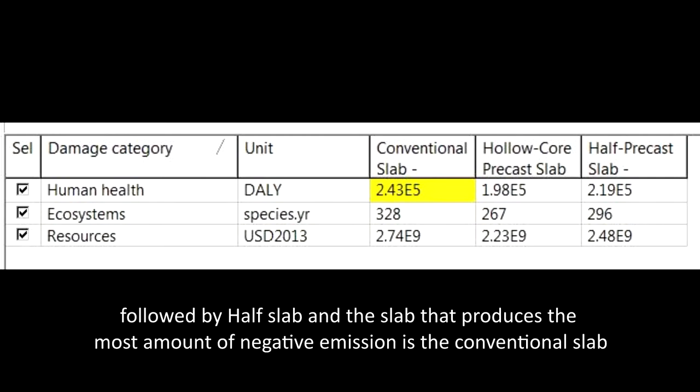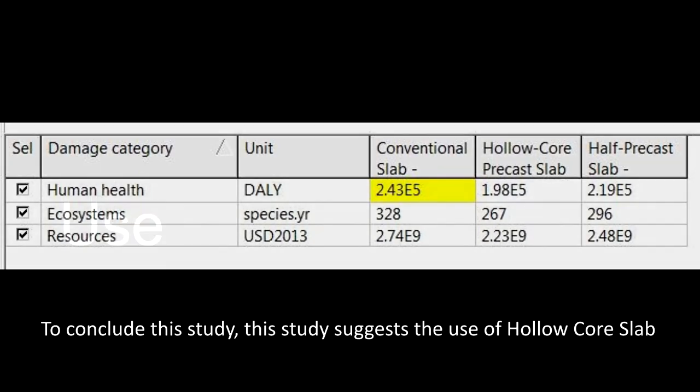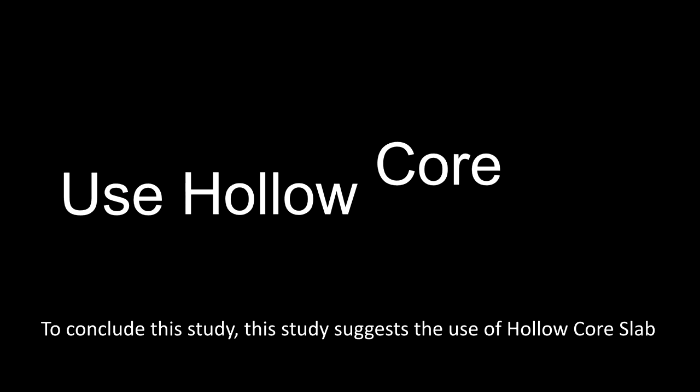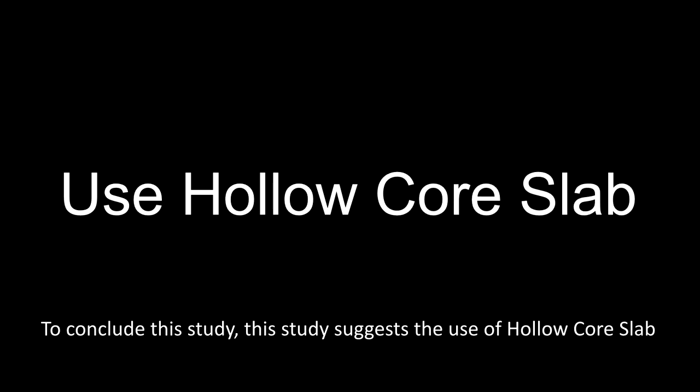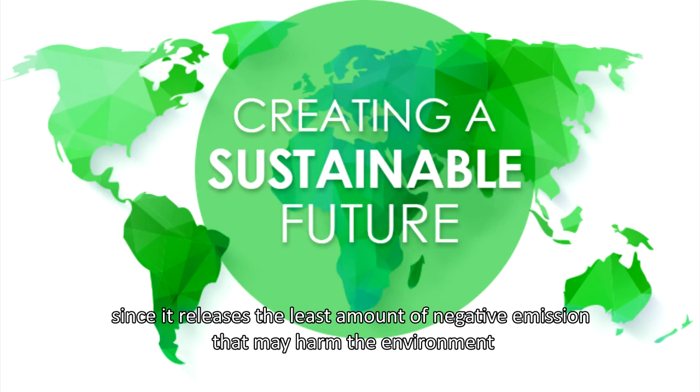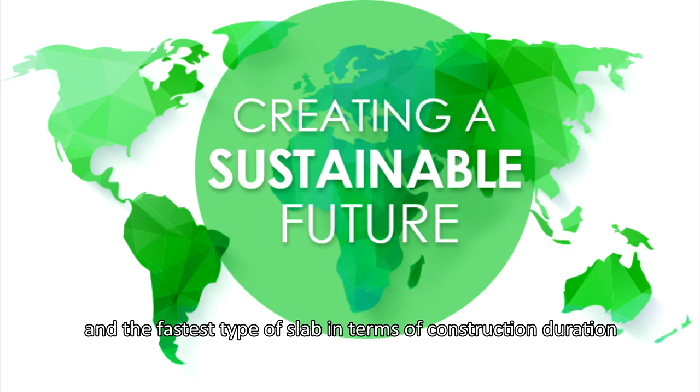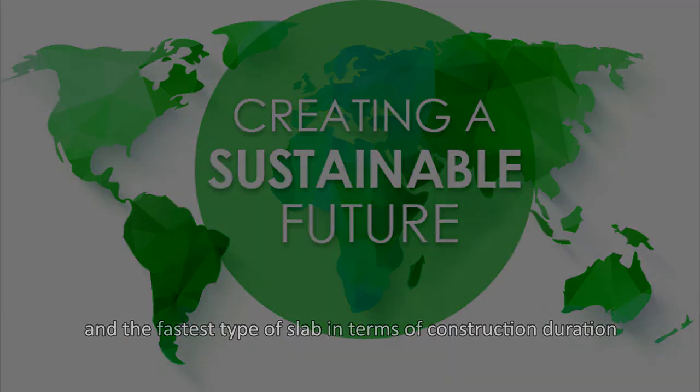To conclude this study, this study suggests the use of hollow core slab since it releases the least amount of negative emission that may harm the environment and the fastest type of slab in terms of construction duration.